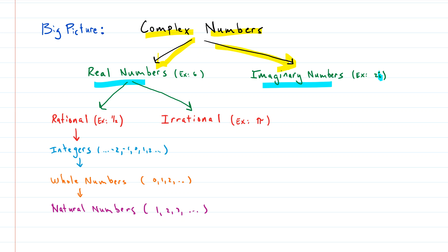The real numbers can be broken down into two other groups. The rationals are any number that can be written as a ratio or a fraction of two integers — like one half, five over one, or three fourths. If it cannot be written as a fraction with two integers, then it's considered irrational. So those are the two groups that real numbers break down into. An example of an irrational number is pi.